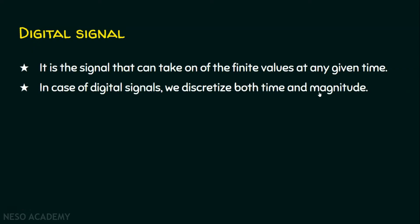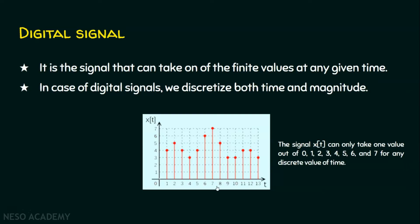This is an example digital signal. The signal x(t) is on the y-axis and time is on the x-axis. The signal x(t) can take only one value out of 0, 1, 2, 3, 4, 5, 6, and 7 for any discrete value of time. Between point A and point B, there may be larger values but they are finite values — if that is the case, then this signal is a digital signal.